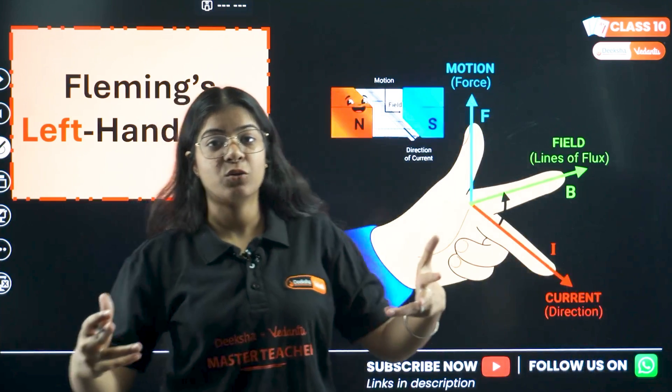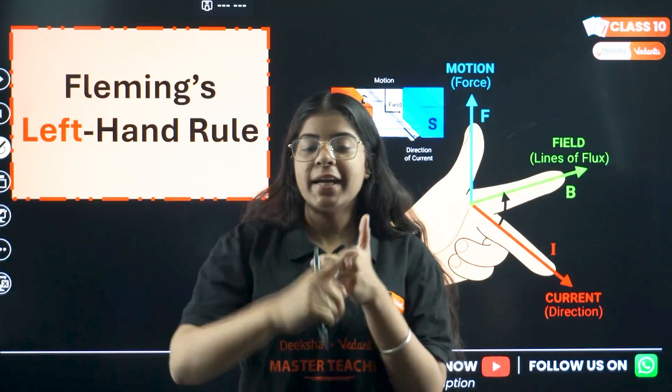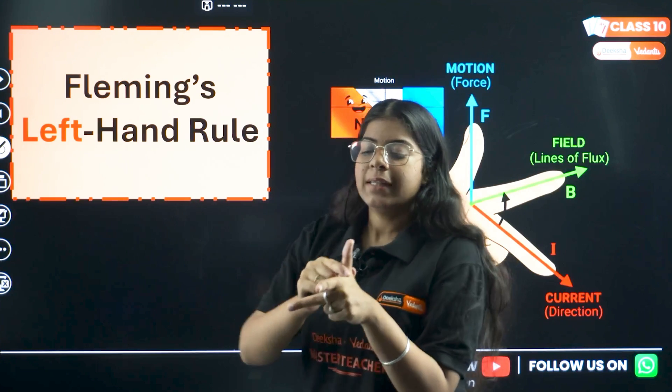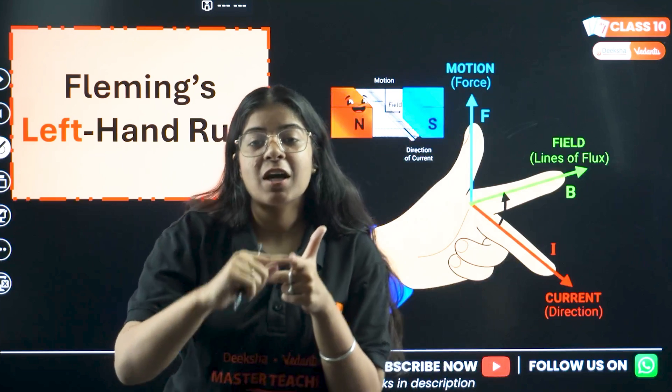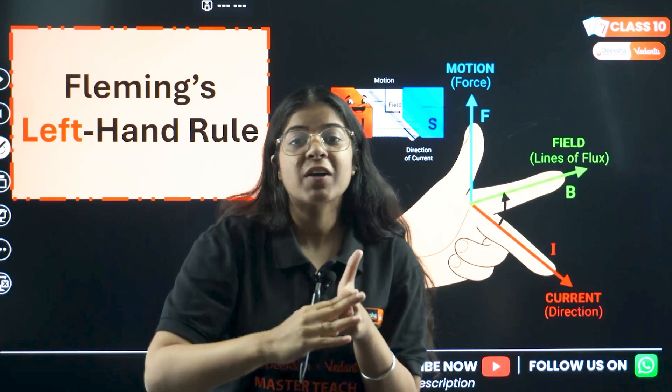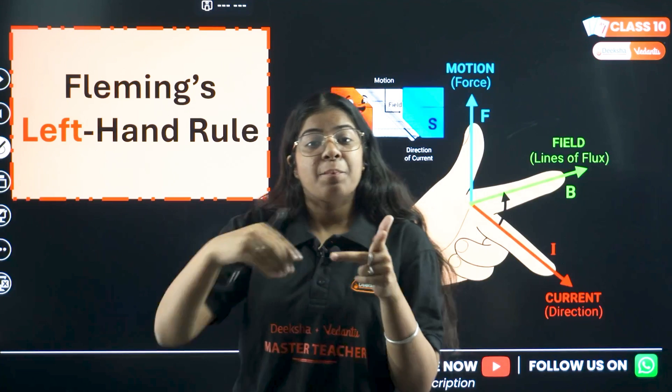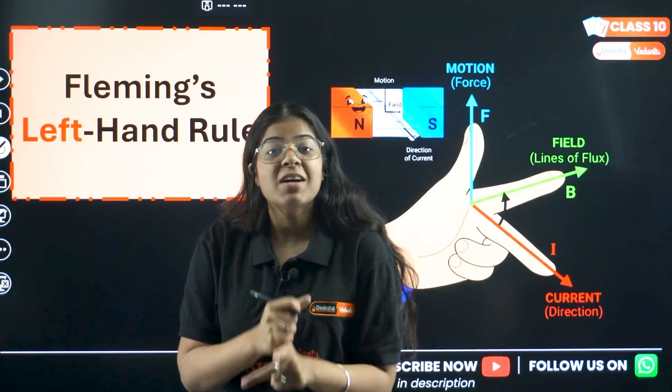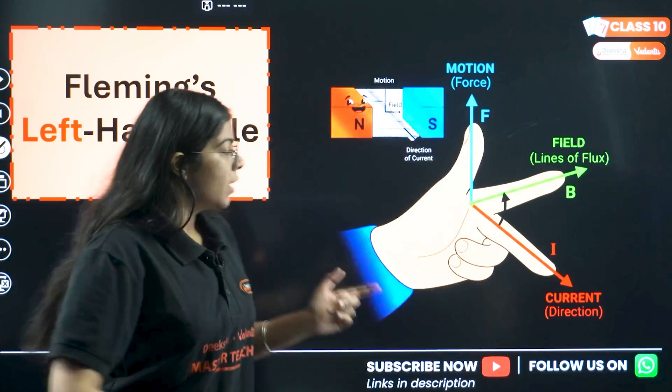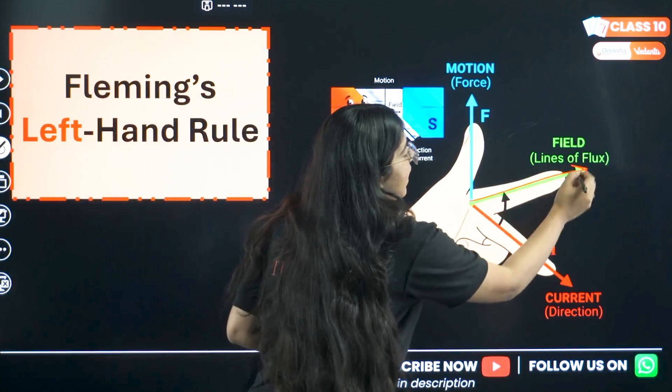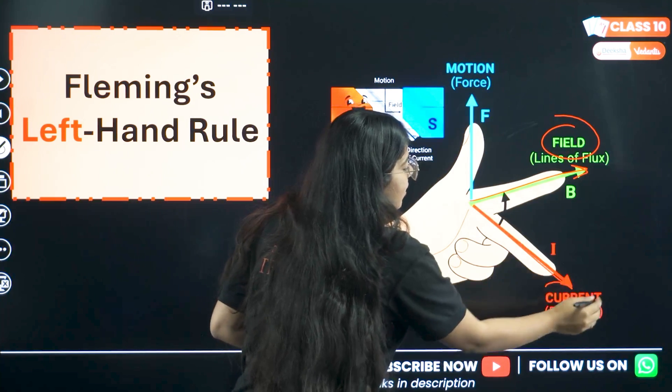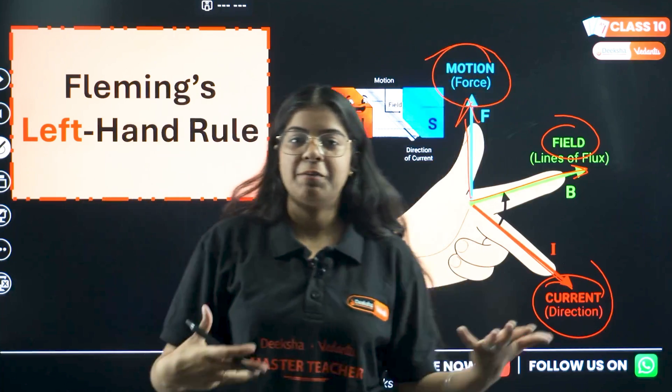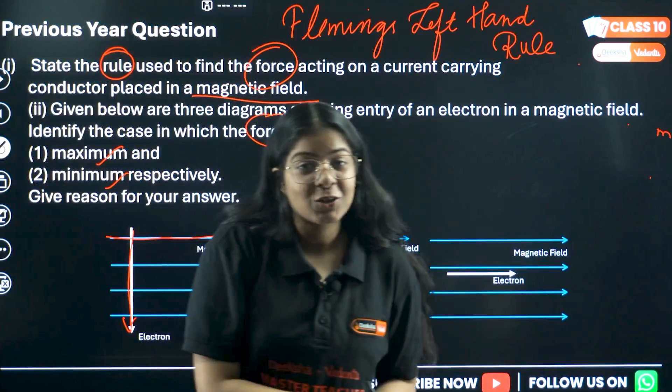Now what does Fleming's left hand rule state? It says that if you point your index finger, your middle finger and your thumb in a direction perpendicular to each other, then if the index finger points at the magnetic field, if middle finger points in the direction of current, then the direction of thumb will give us the direction of force. So let's get back to the numerical.